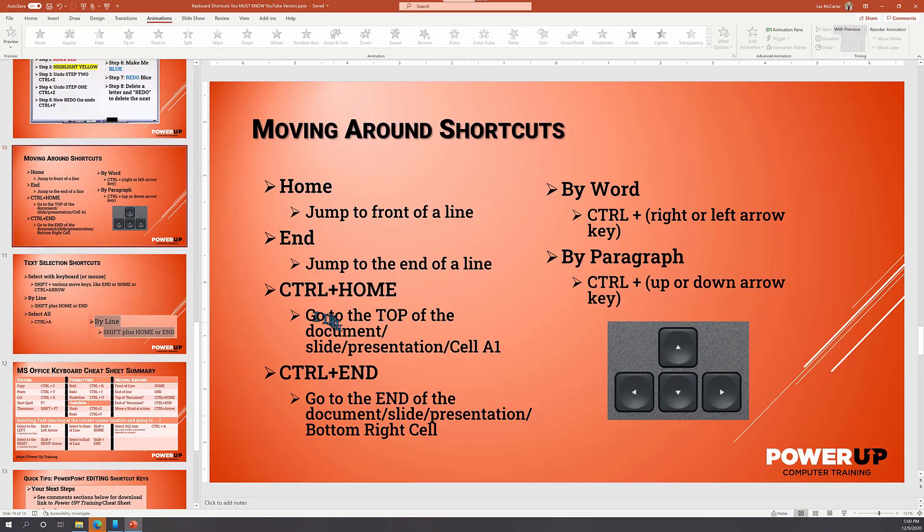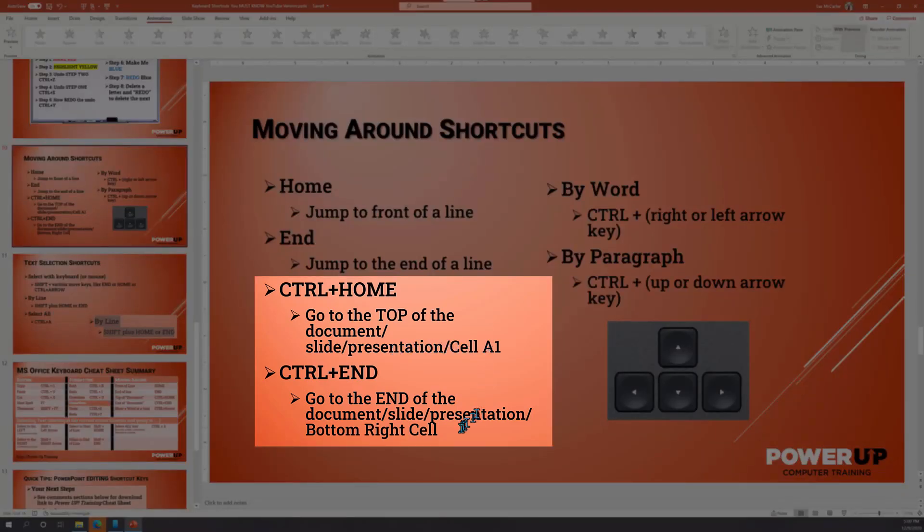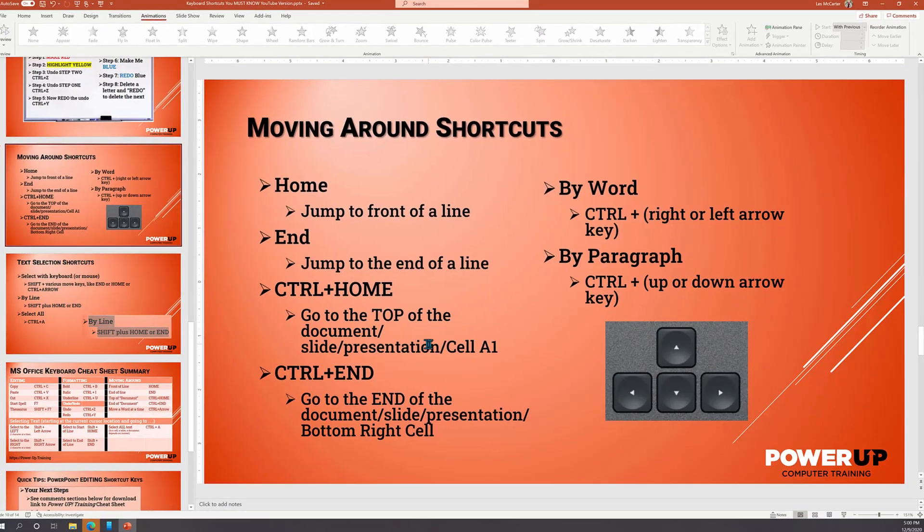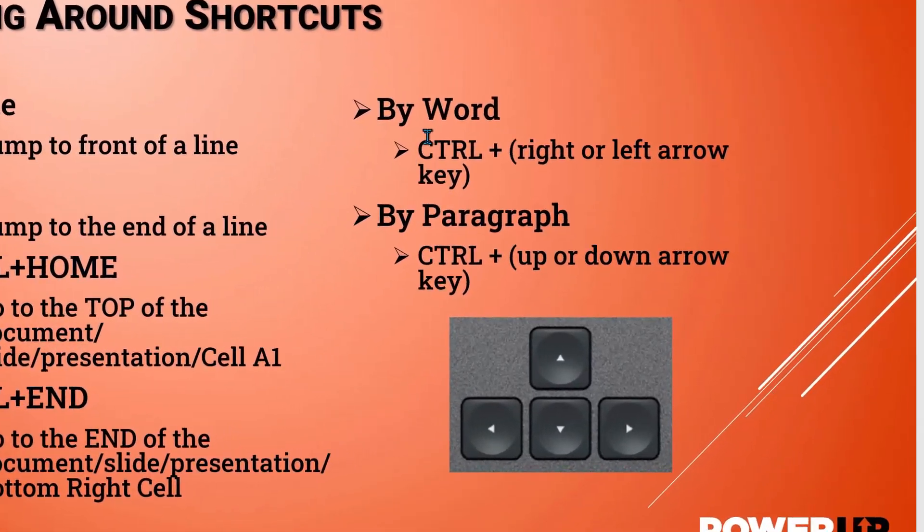So context of where the cursor is located changes the location. In Word, it takes you to the beginning of a word document versus the control end going to the end of a document. Within the spreadsheet, control home takes us to cell A1 and control end takes us to the bottom right-hand corner of the spreadsheet.